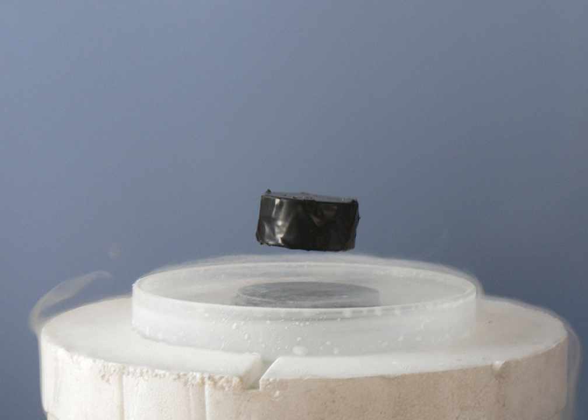In a normal conductor, an electric current may be visualized as a fluid of electrons moving across a heavy ionic lattice. The electrons are constantly colliding with the ions in the lattice, and during each collision some of the energy carried by the current is absorbed by the lattice and converted into heat, which is essentially the vibrational kinetic energy of the lattice ions. As a result, the energy carried by the current is constantly being dissipated. This is the phenomenon of electrical resistance and joule heating.